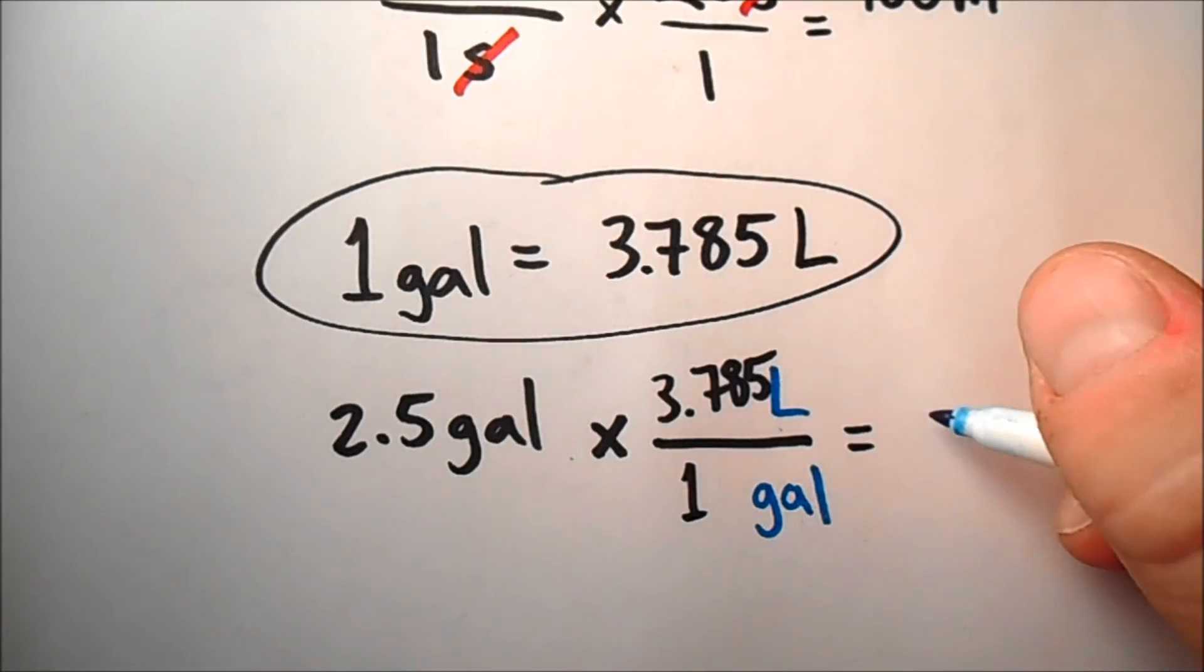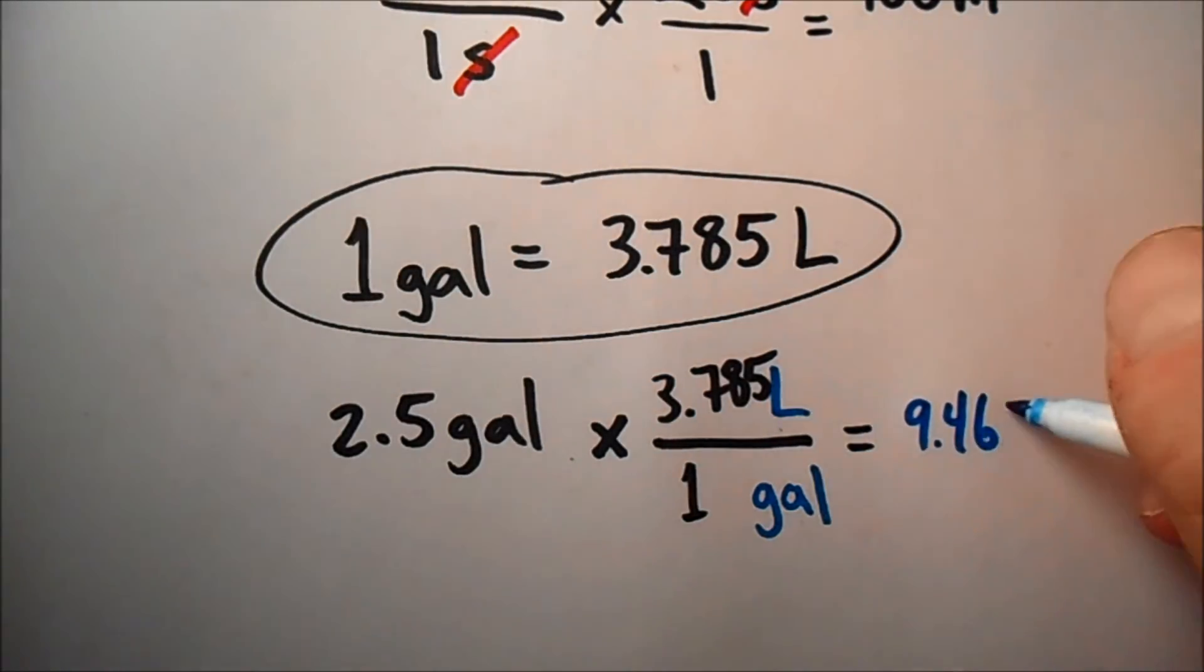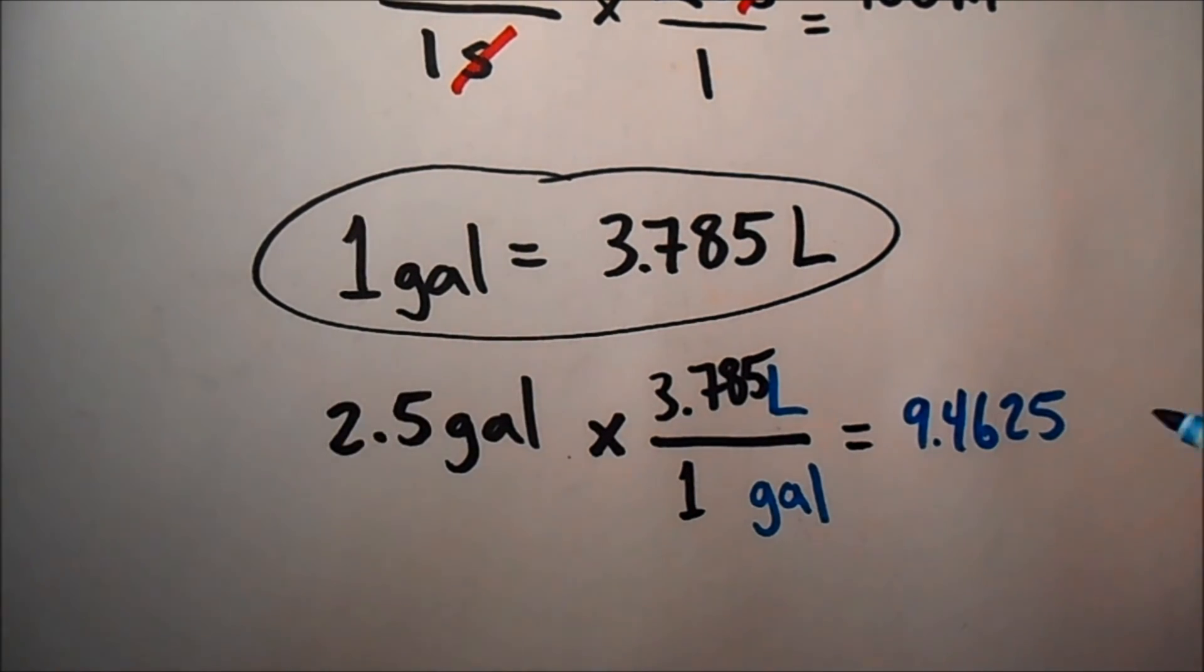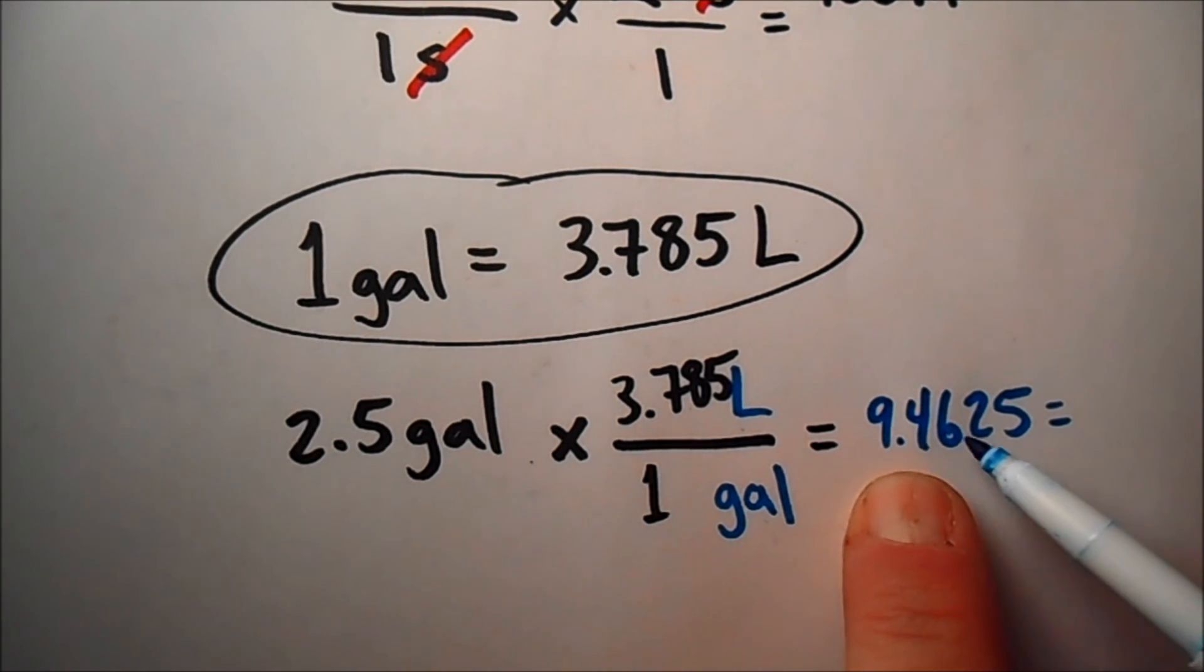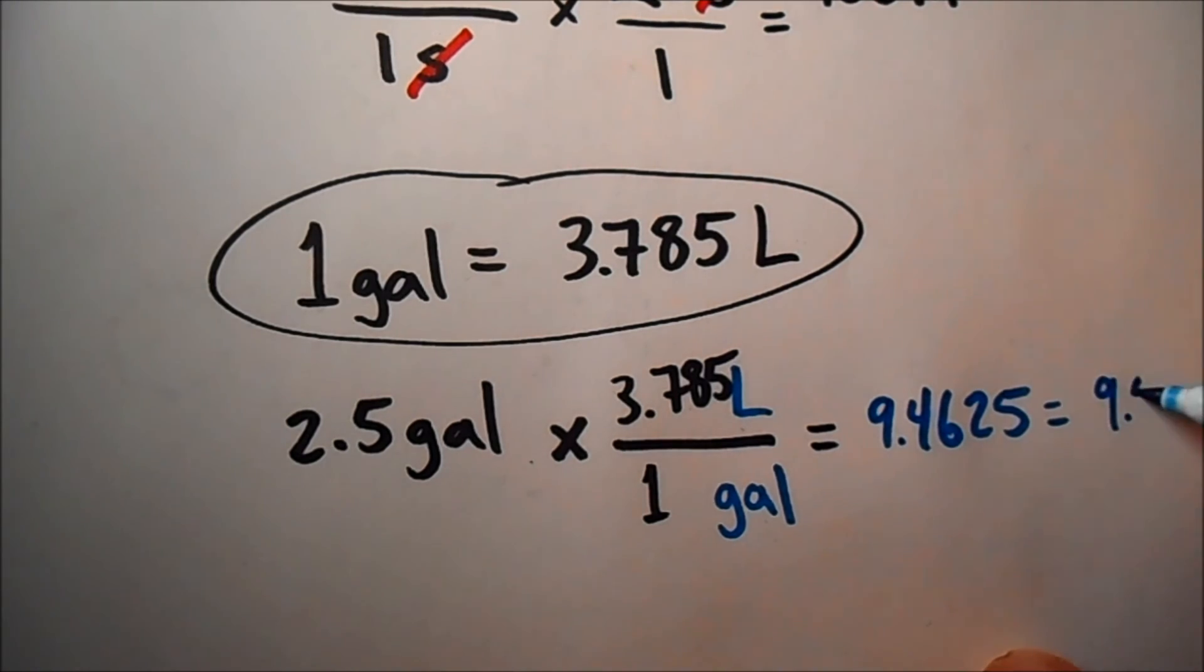We'll go ahead and write down the raw answer, 9.4625, and then when we round that to the correct number of significant figures, that's going to be just 2 sig figs. So we're going to call that 9.4 rounds up because of the 6, so this is going to be 9.5. Gallons canceled and so this is just liters.